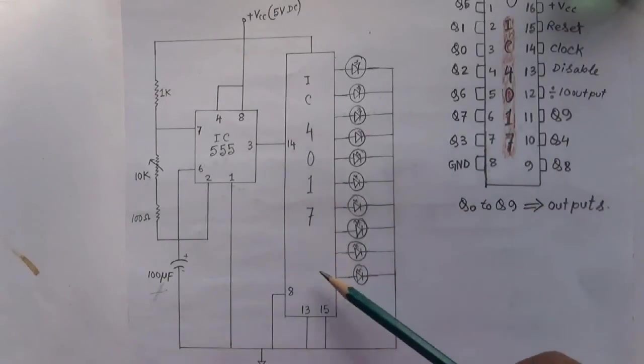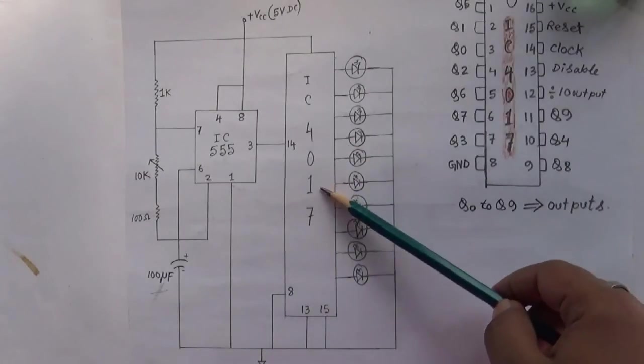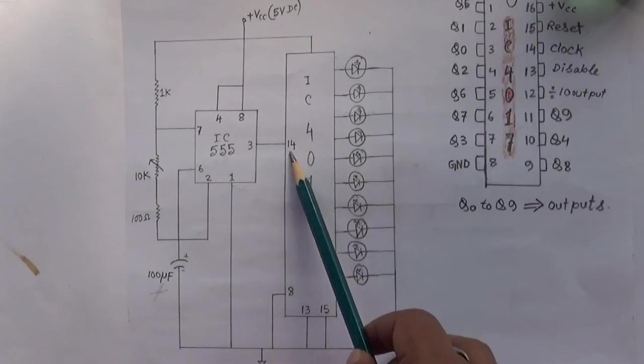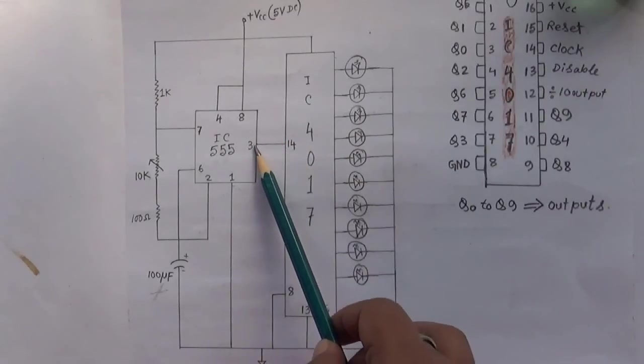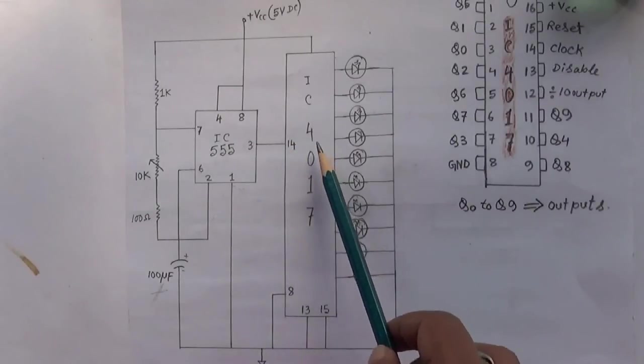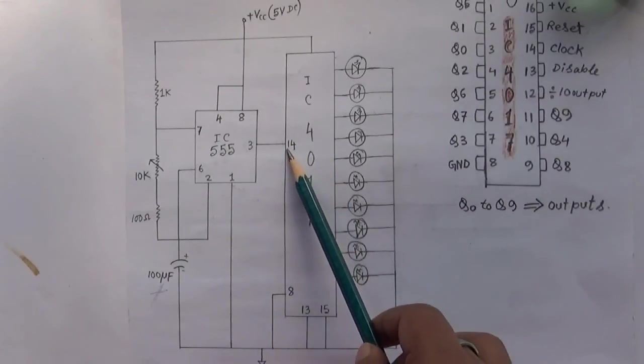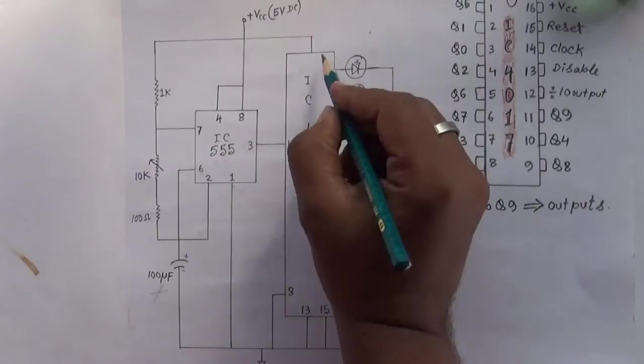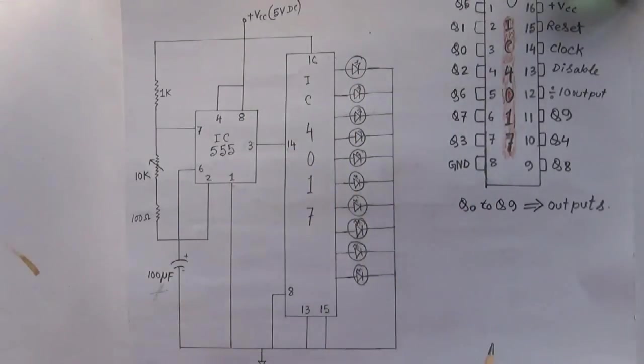And this is the IC configuration, 4017 configuration. Now this is a clock input and the output of this 555 IC goes into the IC4017 into the clock input. Pin 8 is a ground, pin 13 and pin 15 is also grounded, and it is pin 16 plus VCC.